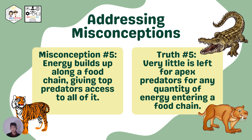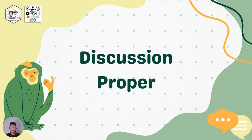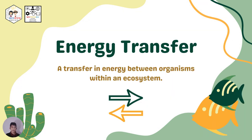Those are all the misconceptions we have gathered. Do you have some unsure ideas regarding this topic? Feel free to share by messaging our social media sites at Filipino Science Hub. Now we will go to the discussion proper and discuss how energy is passed and transferred to different organisms in our environment. Energy transfer is the transfer of energy between organisms within an ecosystem.